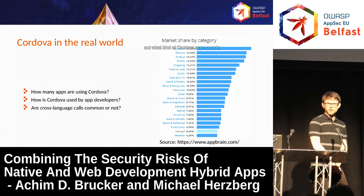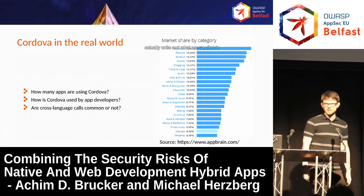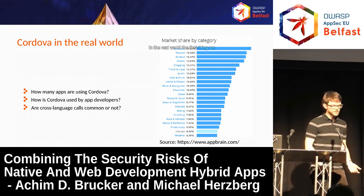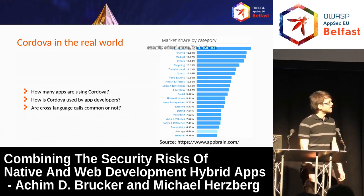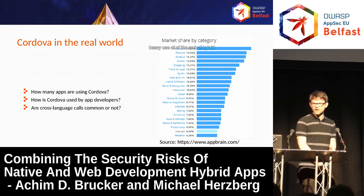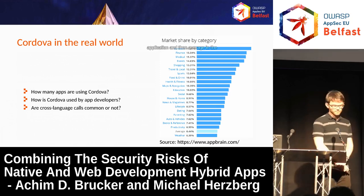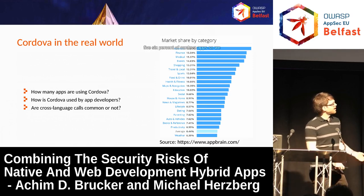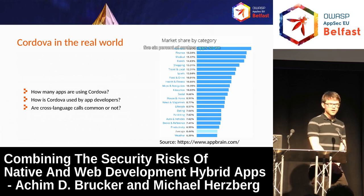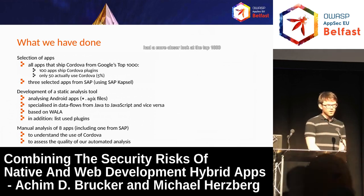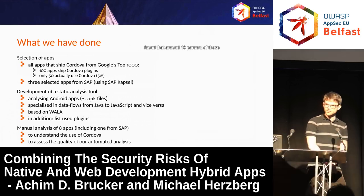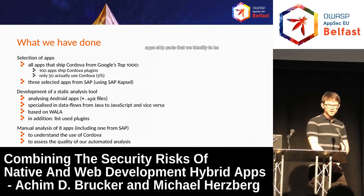We wanted to find out what kind of Cordova apps people actually write and what we can find in the store. The first thing we noticed is that especially the rather security-critical areas — like business, finance, or medical — make rather heavy use of hybrid applications. On average in the store, there are about five to six percent Cordova apps. We had a closer look at the top 1,000 apps in the Google Play Store and found that around 10 percent ship parts we identified as part of the Cordova framework.